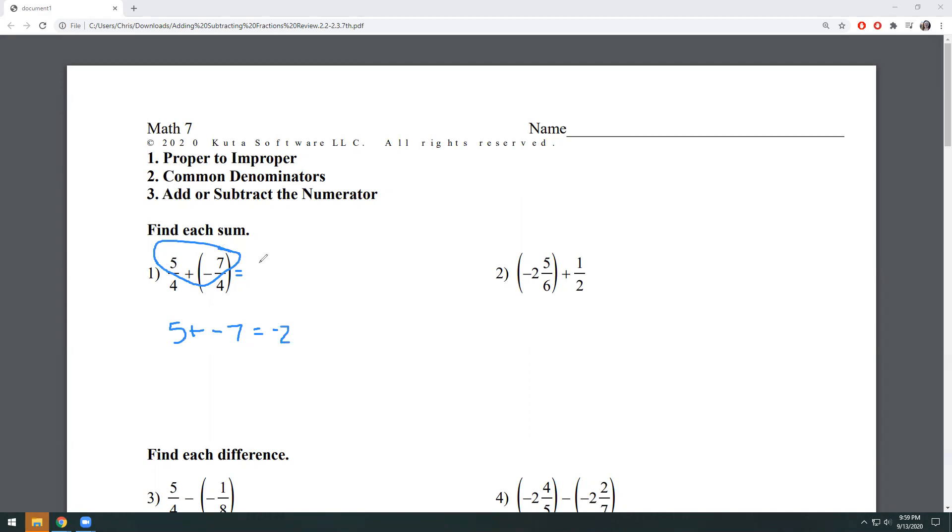And so we're just going to put it all together. Our numerator is a negative two, our denominator is a positive four. I want to keep that in simplest terms. So I know two and four are both divisible by two. So I'm going to divide both the numerator and denominator by two. Two divided by two gives me a one and I'm going to keep my negative on it. Four divided by two gives me a two. And so my final answer is going to be negative one half for that first problem.